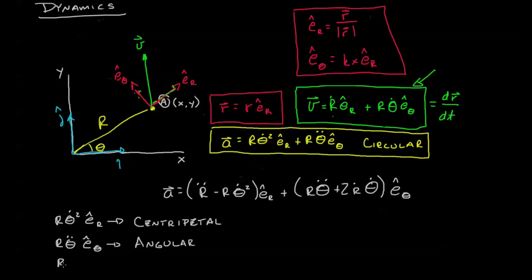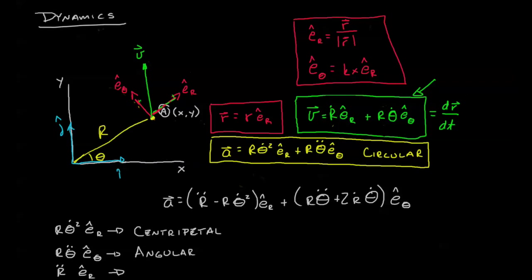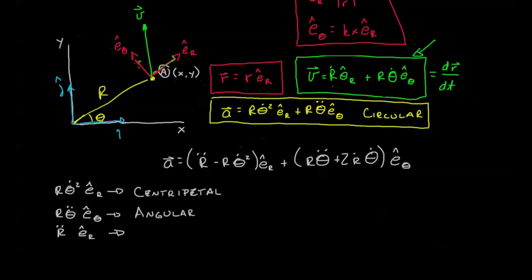The next term that's new to us is r double dot e_r. This is the acceleration we would see when something is going directly away from us.